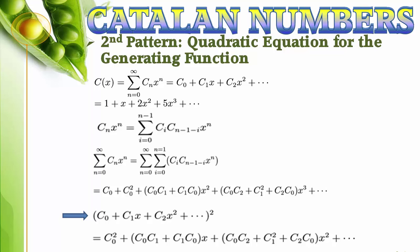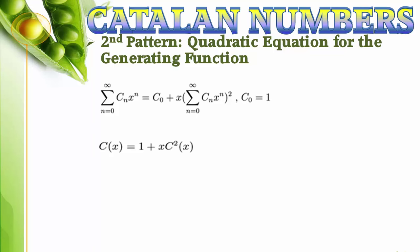In the square of the generating function, the coefficient of x to the n is the sum from i equals 0 to n of C sub i times C sub n minus i. This is the same as the coefficient of x to the n plus 1 on the right-hand side. So the right-hand side is just x times the generating function squared plus a constant, which is the 0th Catalan number. This is the quadratic equation that Goldbach found. Now we have a second pattern for the Catalan numbers. We just need to apply the quadratic formula to obtain a closed form for the generating function.